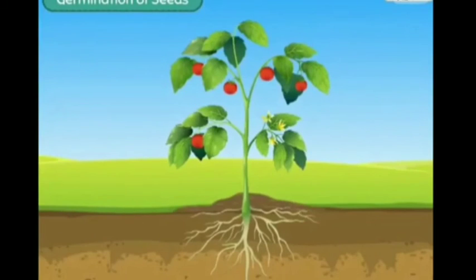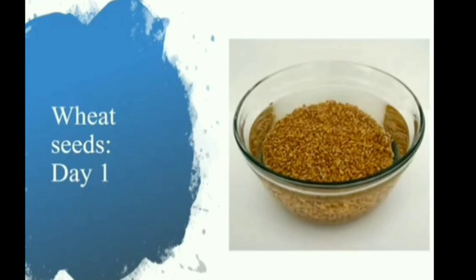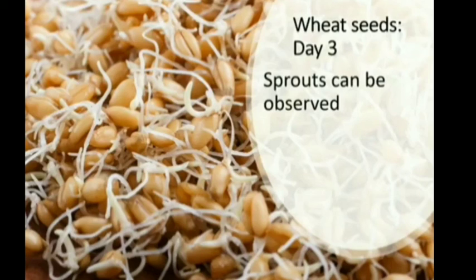The radical develops to form the root system of the plant, while the plumule gives rise to the shoot system bearing leaves and branches. This young plant is called a seedling. The cotyledons keep providing food to the seedling until the leaves form and start making food for the plant. At the end, the plant gives flowers, fruits, and more seeds.